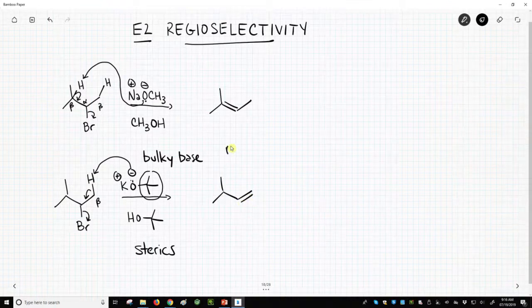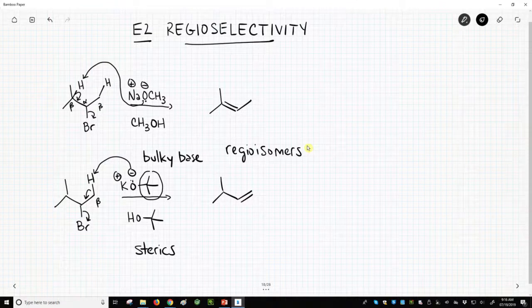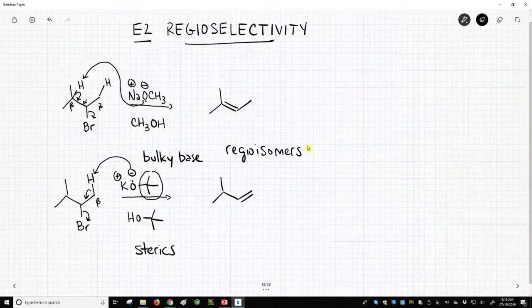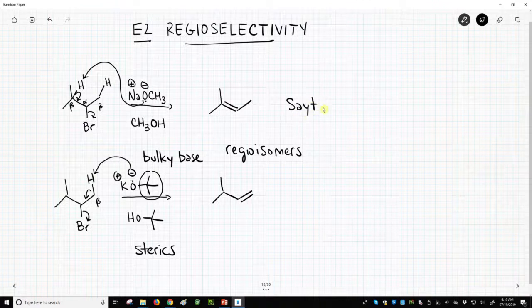These are called regioisomers, and they arise from a regioselectivity issue in this reaction. We actually have names for these products, named after the scientists who discovered them.